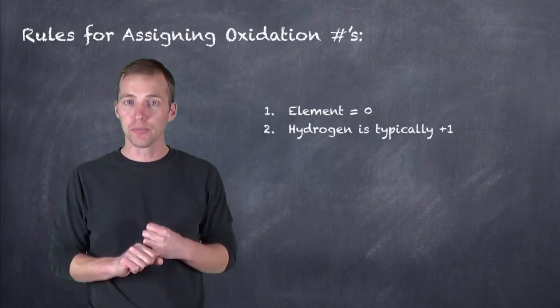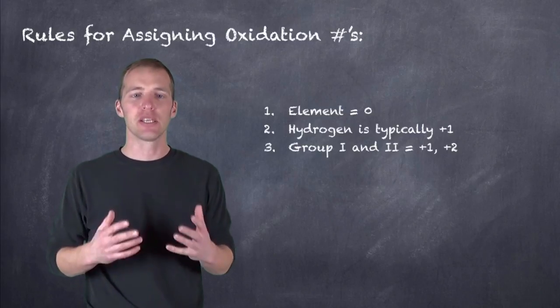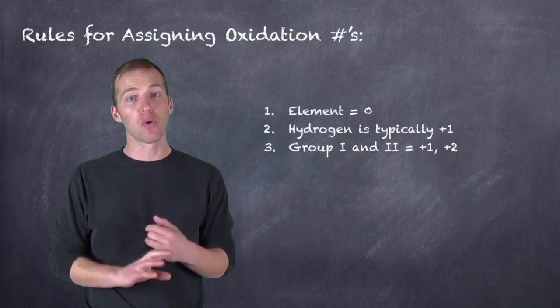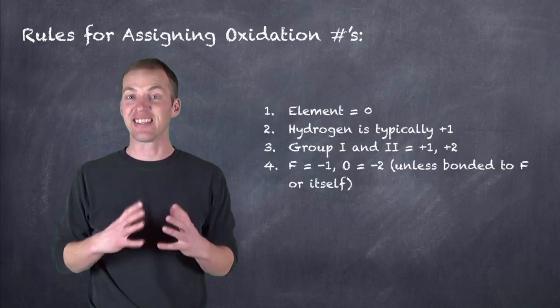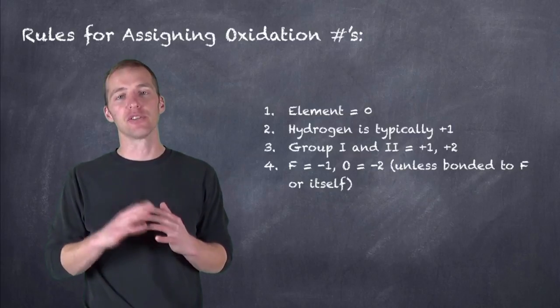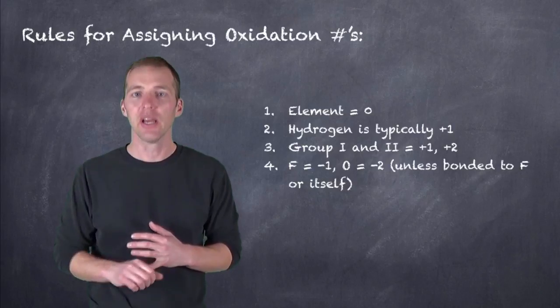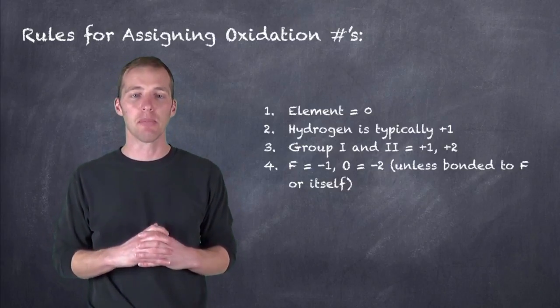Groups one and two, so this does include hydrogen as well, but groups one and two typically are going to be plus one and plus two. Fluorine is always going to be minus one because it's so highly electronegative. Oxygen, also because it is highly electronegative, is always going to be minus two. In fact, I shouldn't say always because there are instances in which hydrogen can bond to fluorine, in which case it's not minus two, or when oxygen bonds to itself, it's not going to be minus two either.